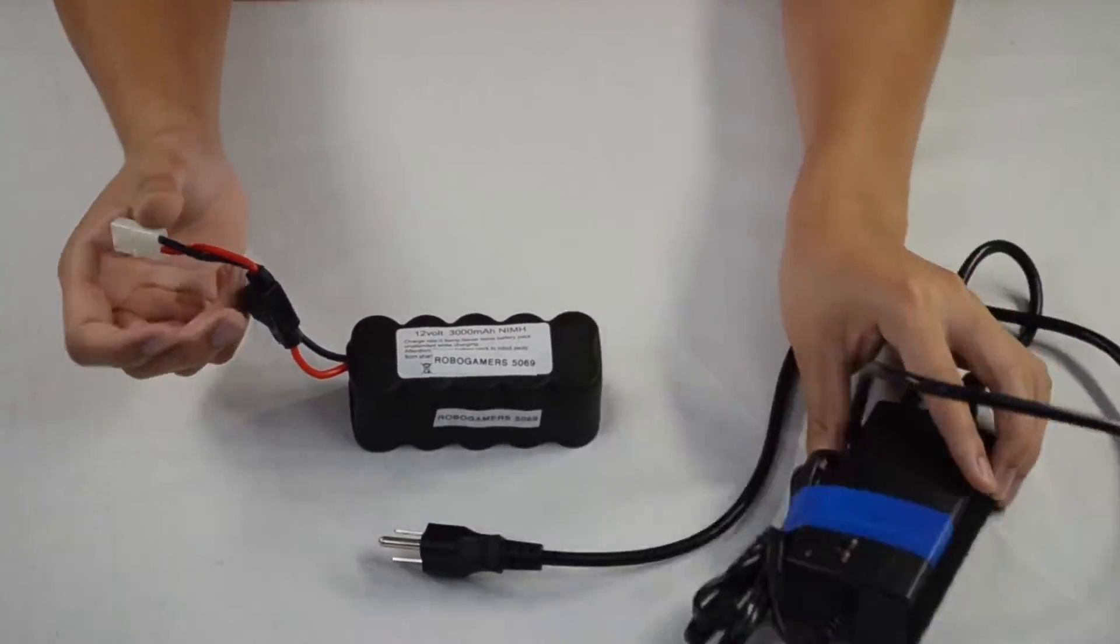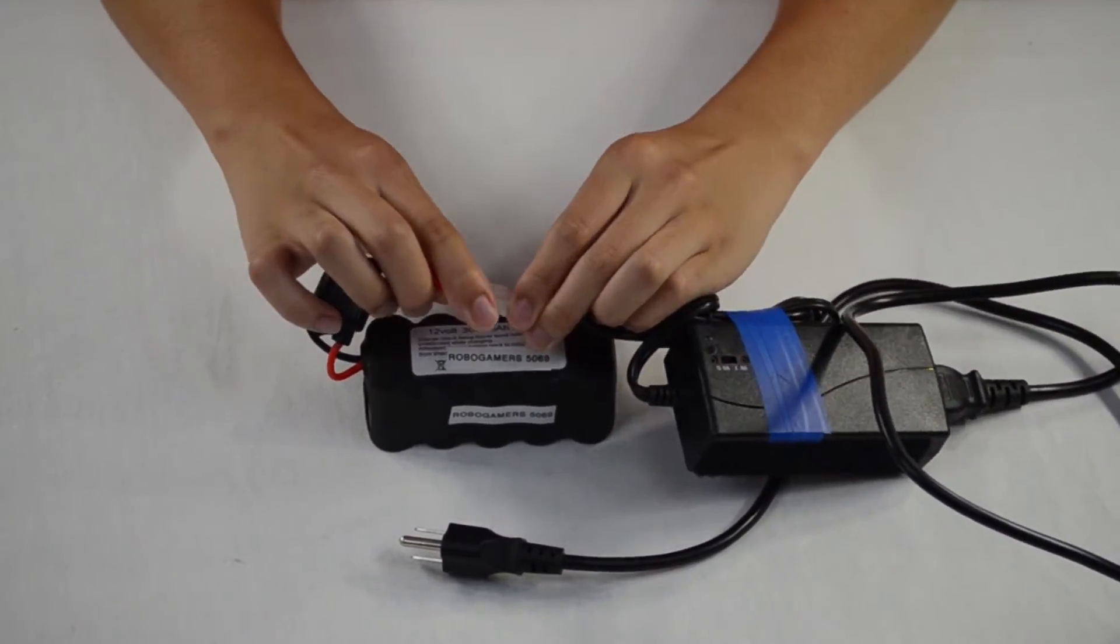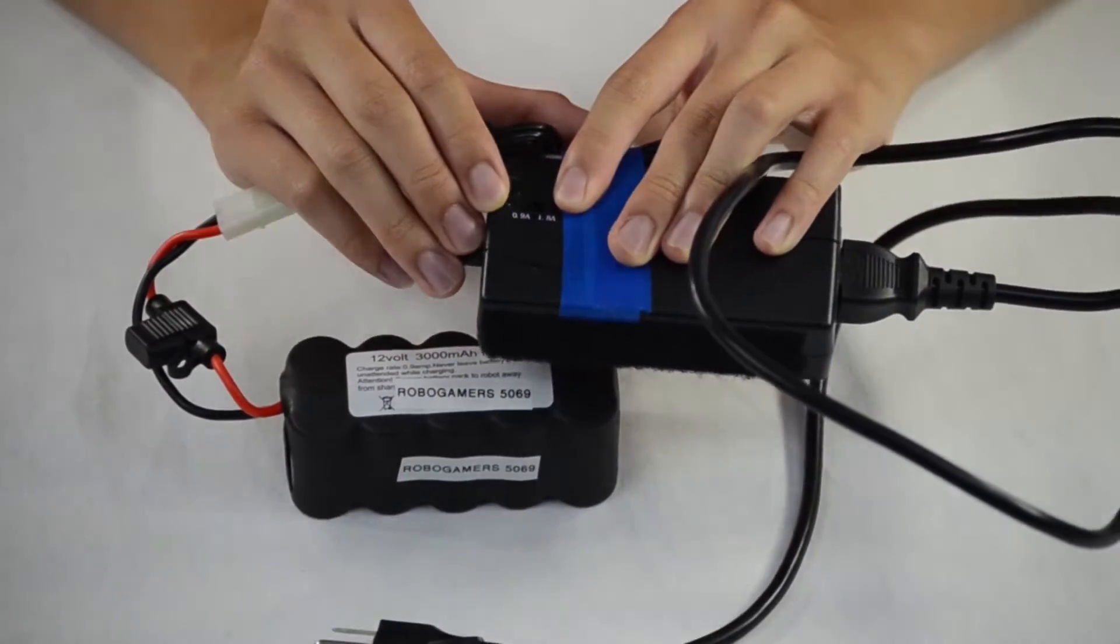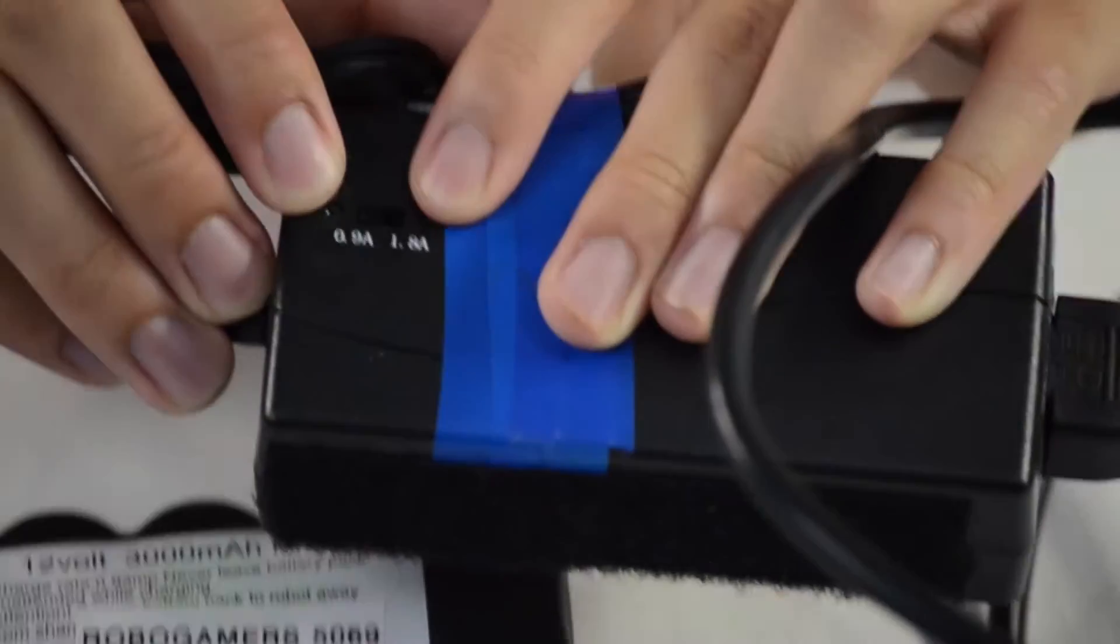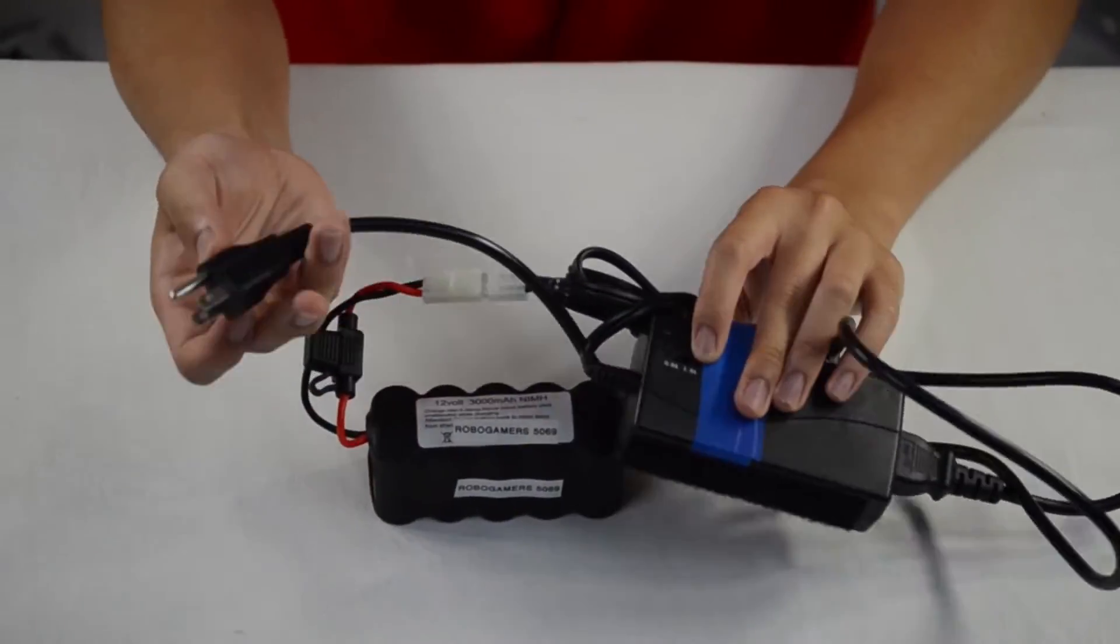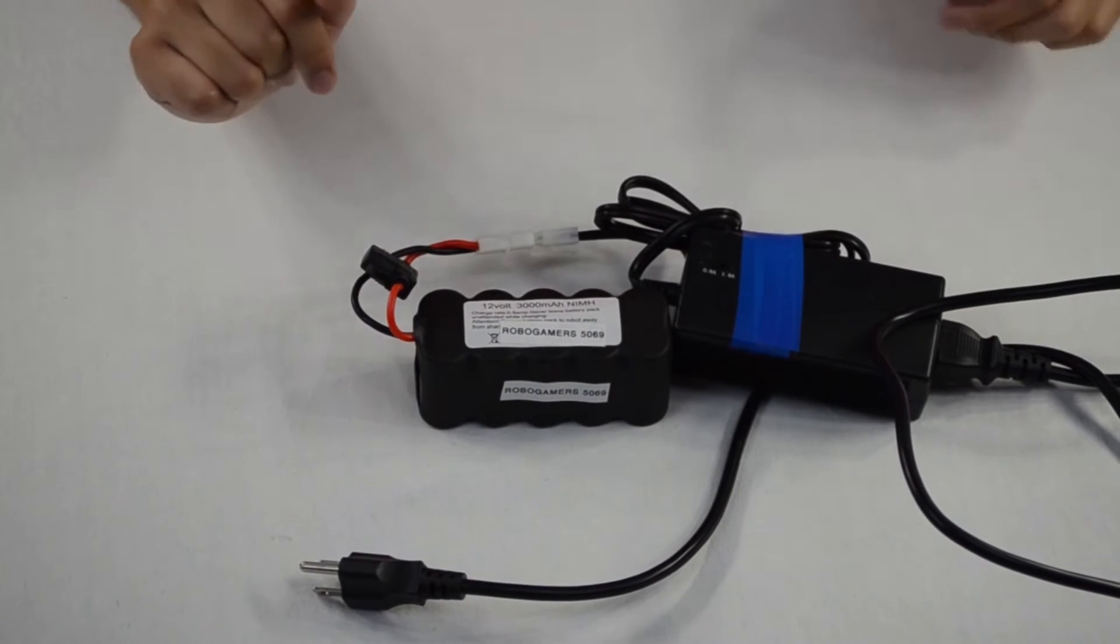The charger is very simple. It has one end which is an adapter to the battery where you can actually easily just plug it in. And then there's also a switch between 0.9 amps and 1.8 amps. Always be sure to leave it on the 0.9 amps so that it doesn't overheat, and then simply it just plugs into the wall. And so that's your battery and battery charger.